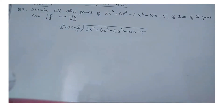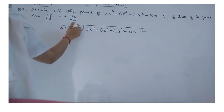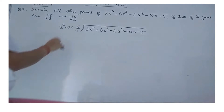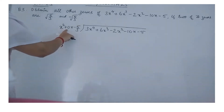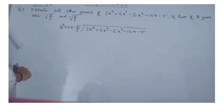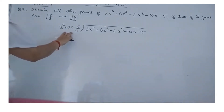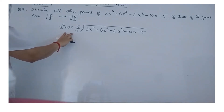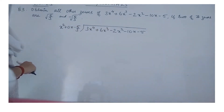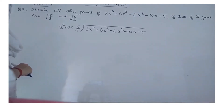Since x² - 5/3 is a factor of the polynomial, by dividing the two we will get the remainder as 0. We are now dividing the given polynomial by it, because the quotient we get after the division will also be a factor of the given polynomial.